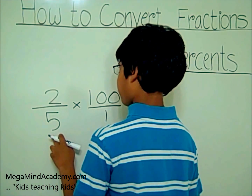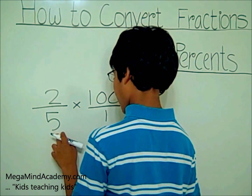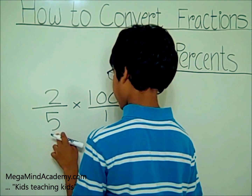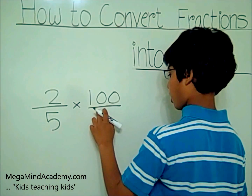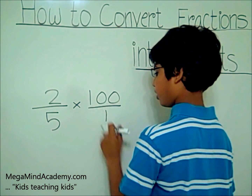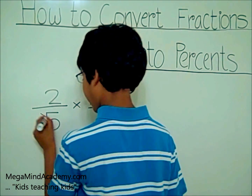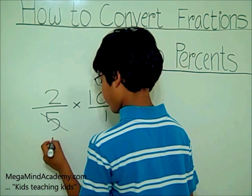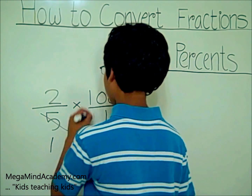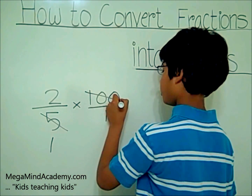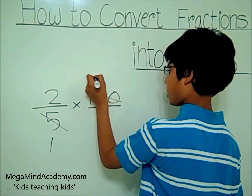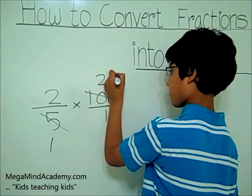Since five times twenty equals one hundred, you cross the five, you put a one, then you cross the one hundred, and you put twenty.